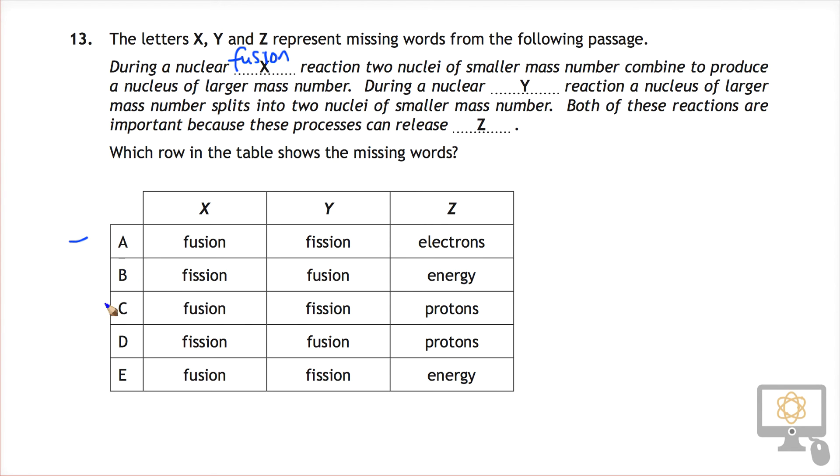And so that means the answer is A or C or E because that's what X is in this column. And then it says during a nuclear Y reaction, the nucleus of a larger mass splits into two smaller nuclei of smaller mass number.